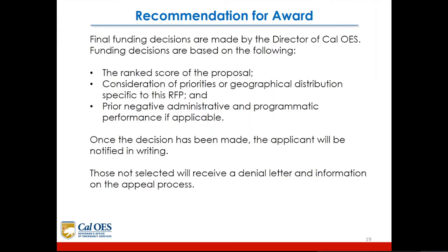Final funding decisions are made by the director of CalOES. Funding decisions are based on the rank score of the proposal, consideration of priorities or geographical distribution specific to the RFP, and prior negative administrative and programmatic performance if applicable. Once the decision has been made, the applicant will be notified in writing. Those not selected will receive a denial letter and information on the appeals process.